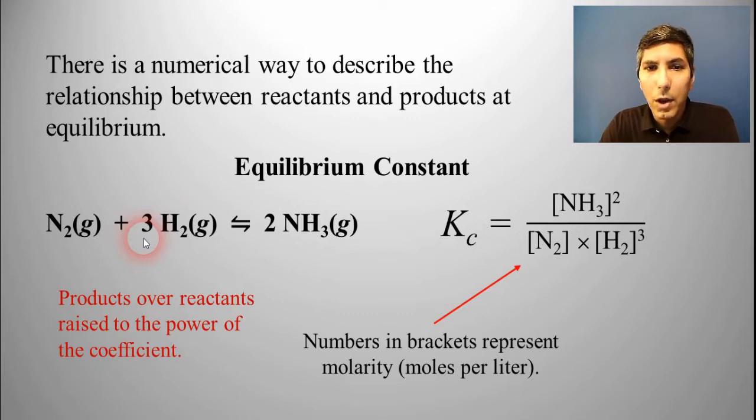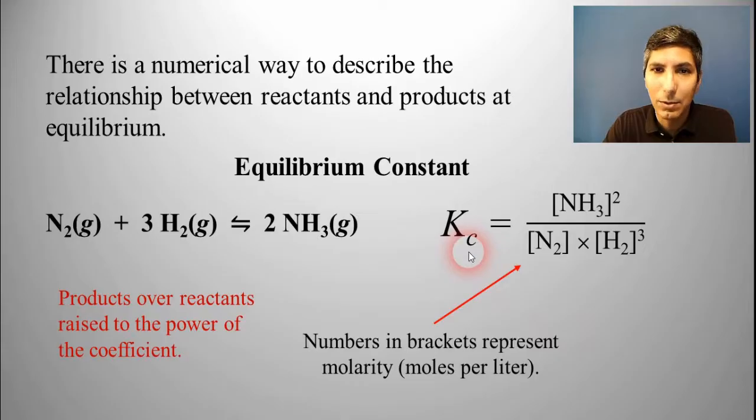Now, in chemistry, whenever we have something in brackets, like you see here in this expression, brackets represent the concentration in moles per liter. So hopefully you remember something about molarity and how to calculate that, just moles divided by liters. There are several different types of equilibrium constants. The first one that we're going to look at here is called K sub C or KC. And that C right there represents the fact that we're talking about equilibrium in terms of concentration, C for concentration.